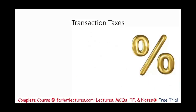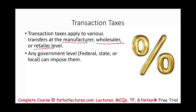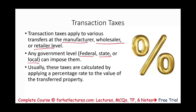Transaction taxes apply to various transfers — something that happens at a manufacturer level, wholesale level, and retail level. Basically, when there's a purchase and a sale between two parties, it's a transaction. Any government level can levy transaction taxes — federal, state, and local. Usually, these taxes are calculated as a percentage of the value of the transferred property — for example, 5% or 6% of the transaction.